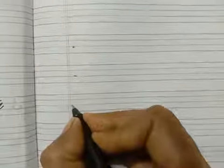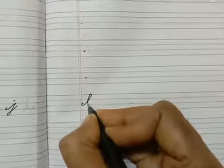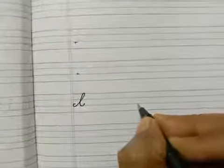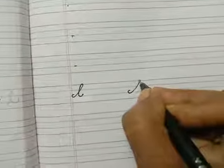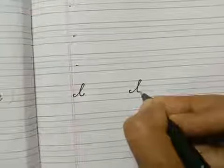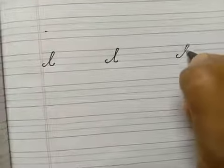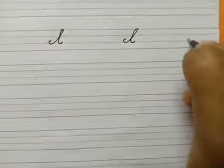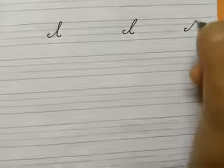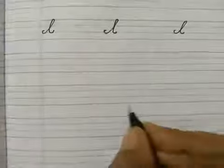Make curve. Slot line, touch the red line, go back, come down and leave it. Once again, make curve. Slot line, touch the red line, come back, come down, leave it. Go up, touch the red line, come back, come down and leave it. It's our small letter L of alphabet.